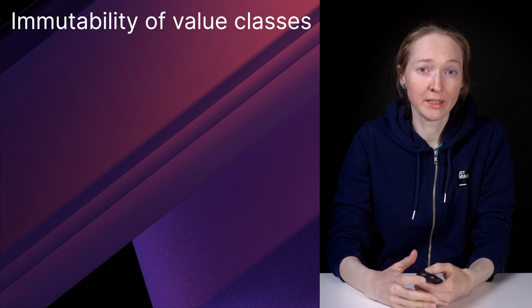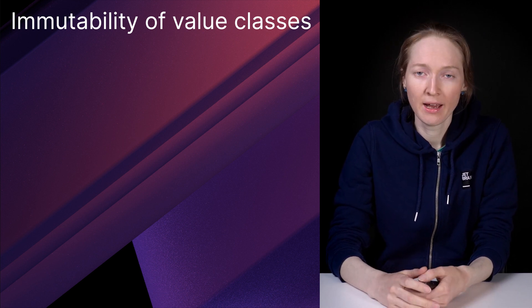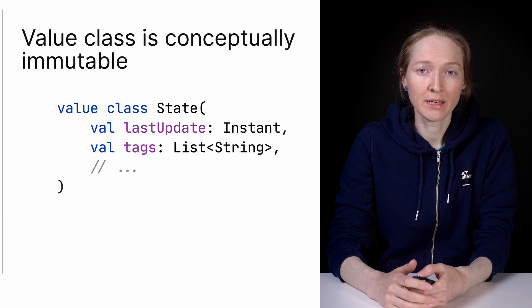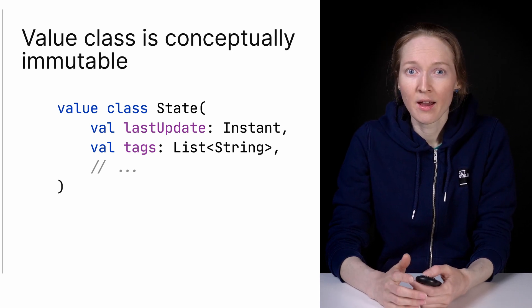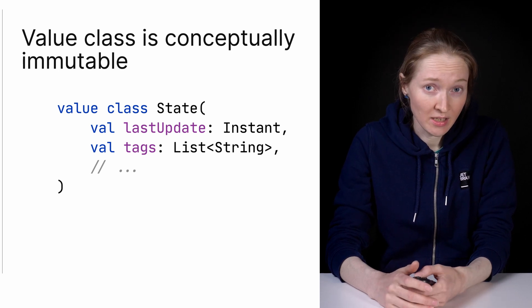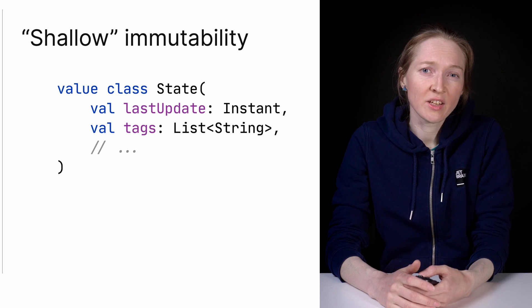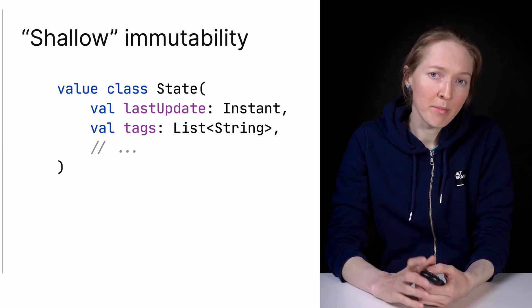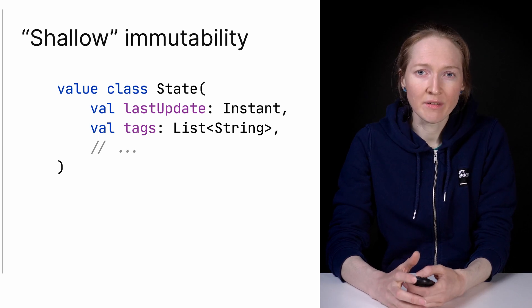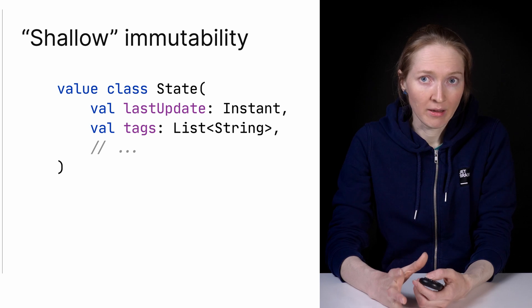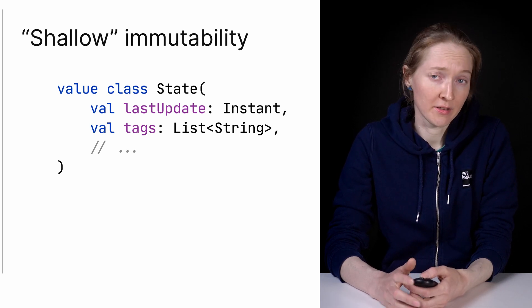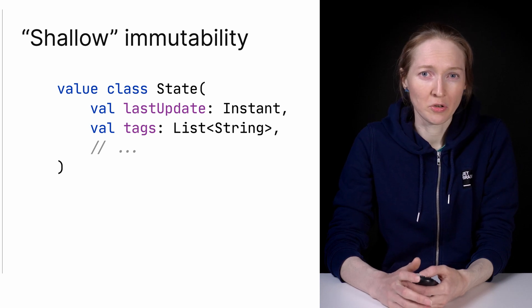Now let's move on to the next topic: immutability. Working with immutable data is becoming more and more popular in modern software development, especially in highly asynchronous systems. Value classes are conceptually immutable and will be great assistance for implementing immutable data structures and immutable business entities in asynchronous environments. However, note that this immutability is shallow – member properties can only be vals, but they themselves might refer to regular mutable classes. In this example, a list of tags might be mutable under the hood.